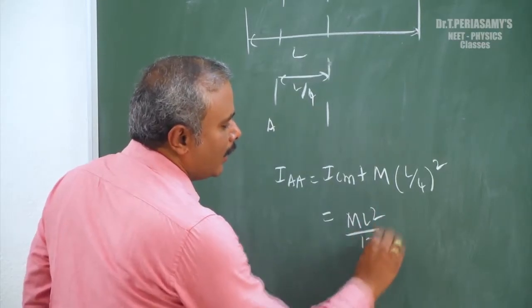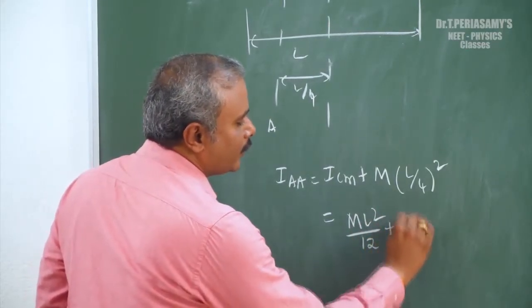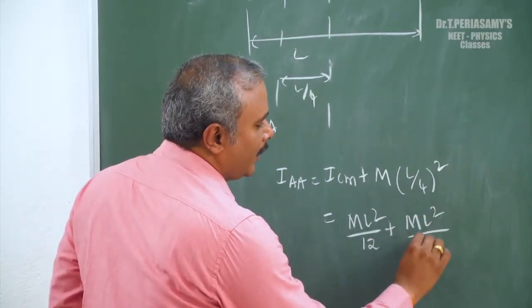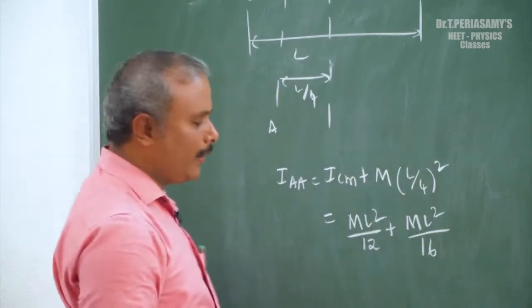Applying the Parallel Axis Theorem: I = ml squared by 12, plus m times (l by 4) squared, which gives ml squared by 12 plus ml squared by 16.